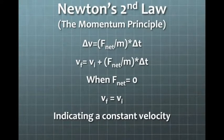Newton's second law, or the momentum principle, states that the change of momentum of a system is equal to the net force acting on the system multiplied by the duration of the interaction. This is expressed using the formula Δv = F_net/m × Δt. This can also be written as v_f = v_i + (F_net/m) × Δt.